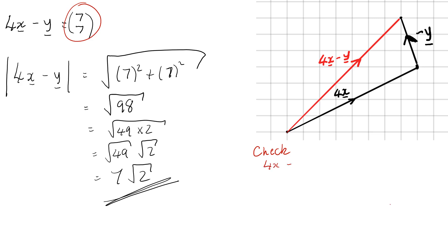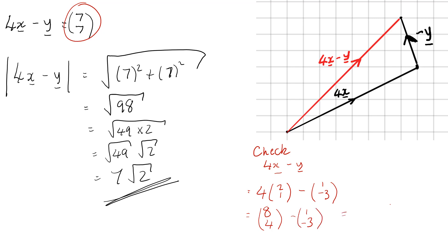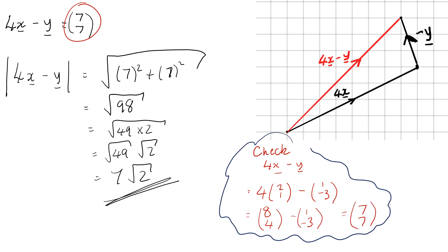We've got our check as well. If we want to evaluate 4x minus y: that is 4 lots of (2, 1) minus (1, -3), which gives (8, 4) minus (1, -3). So 8 minus 1 is 7, and 4 minus minus 3 is 7. This confirms what we found with our drawing. Hope that was helpful — get going with today's work. Thanks very much.